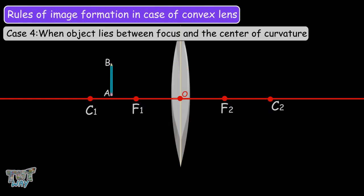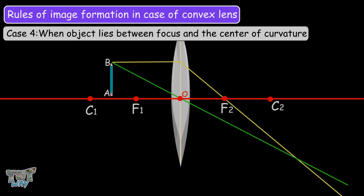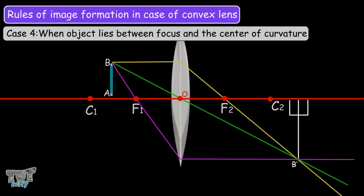The fourth case is when the object lies between C1 and F1. The ray parallel to the principal axis refracts and passes through F2. The ray through the optical center emerges without deviation. The ray through F1 refracts and becomes parallel to the principal axis. These rays meet at point B'. Drawing a perpendicular from B' to the principal axis gives point A'. The image A'B' formed beyond C2 is a real image of enlarged size.